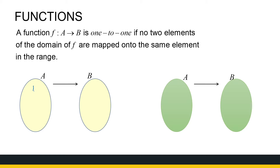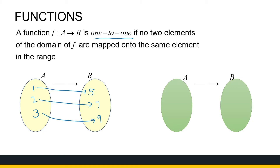For example, say this domain has only three elements: one, two, and three. One gets mapped onto five, two gets mapped onto seven, and three gets mapped onto nine. This is a function because each element of the domain goes to a unique element of the range, and it's one-to-one because no two elements go to the same element of the range. Whereas if one and two both get mapped onto five, and three gets mapped onto seven, it's still a function, but it's not one-to-one because two elements of the domain get mapped onto the same element of the range.